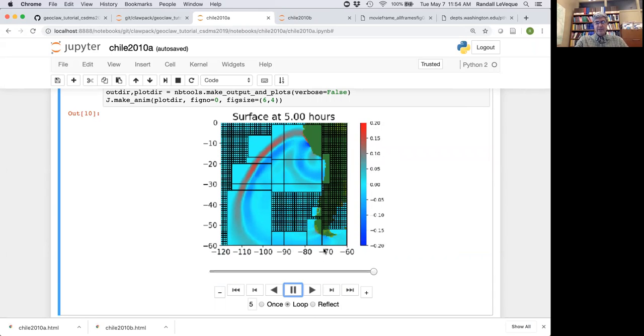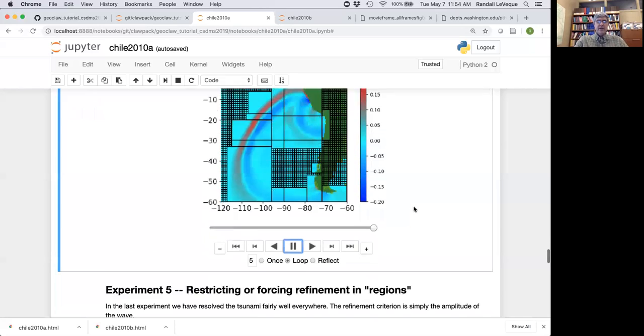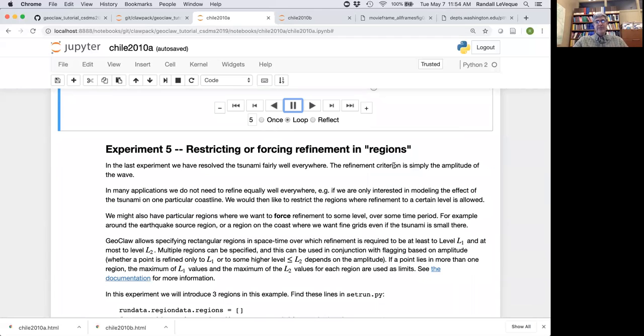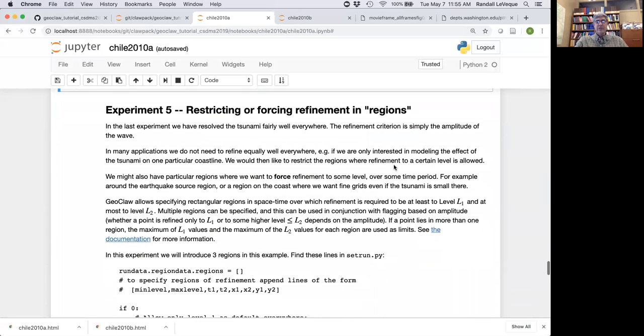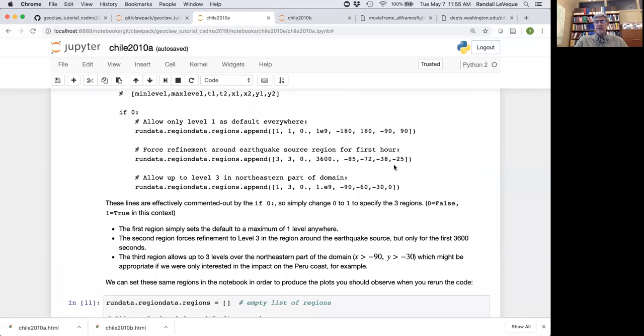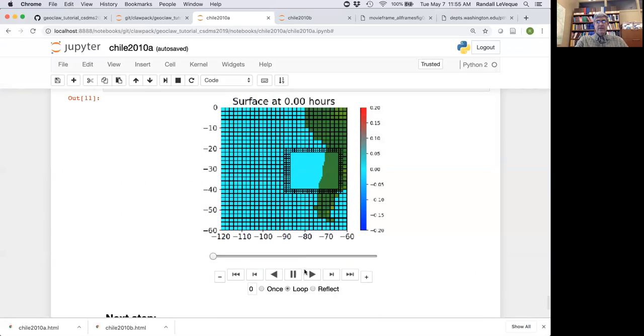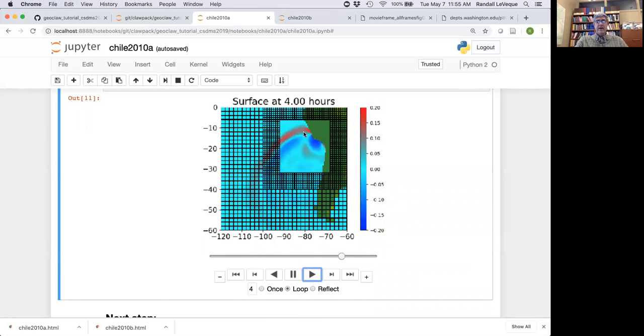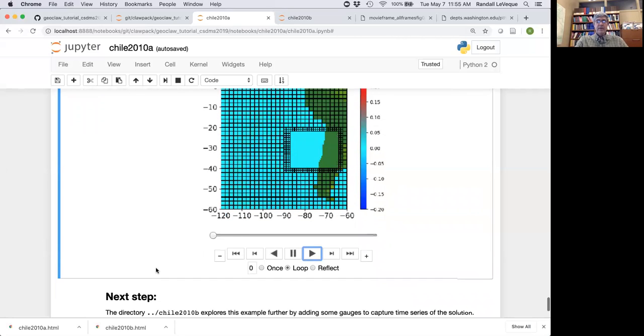Now we see that the level three grid is really following the waves and it's refining everywhere that the wave tolerance is above this .02. It's just looking at the amplitude of the surface of the ocean relative to sea level. Now you might say that's great up here, but we really didn't want to refine this wave that's heading towards Antarctica and off into the Atlantic. There are also capabilities in GeoClaw to specify that in certain regions, we want to only allow two levels or force it to always have three levels regardless of the tolerance. You can specify what we call refinement regions that are rectangular space-time regions. You can say over one time period, you need to refine this rectangle. Over a later time period, it's a different rectangle. This next example gives an example of how you might do that.